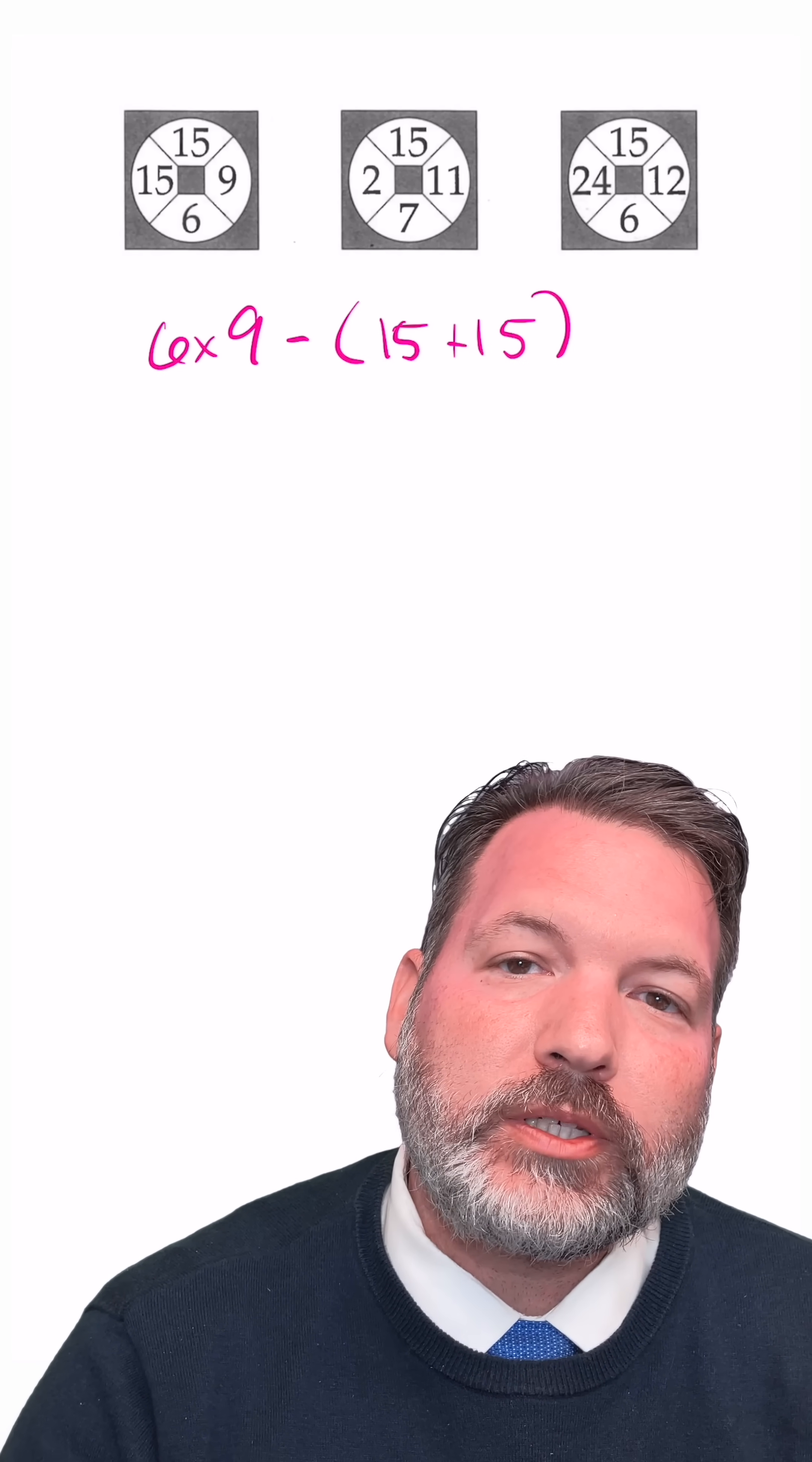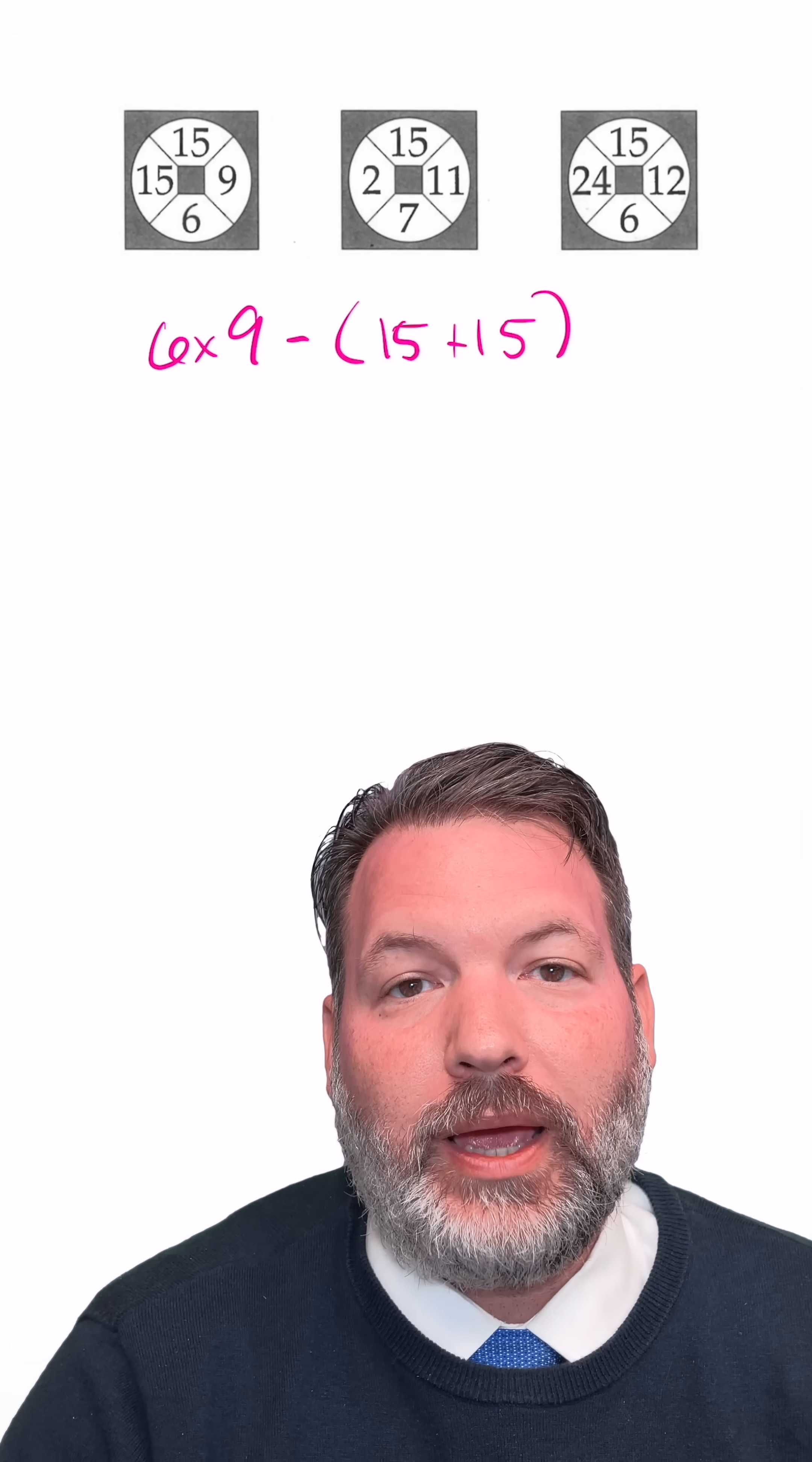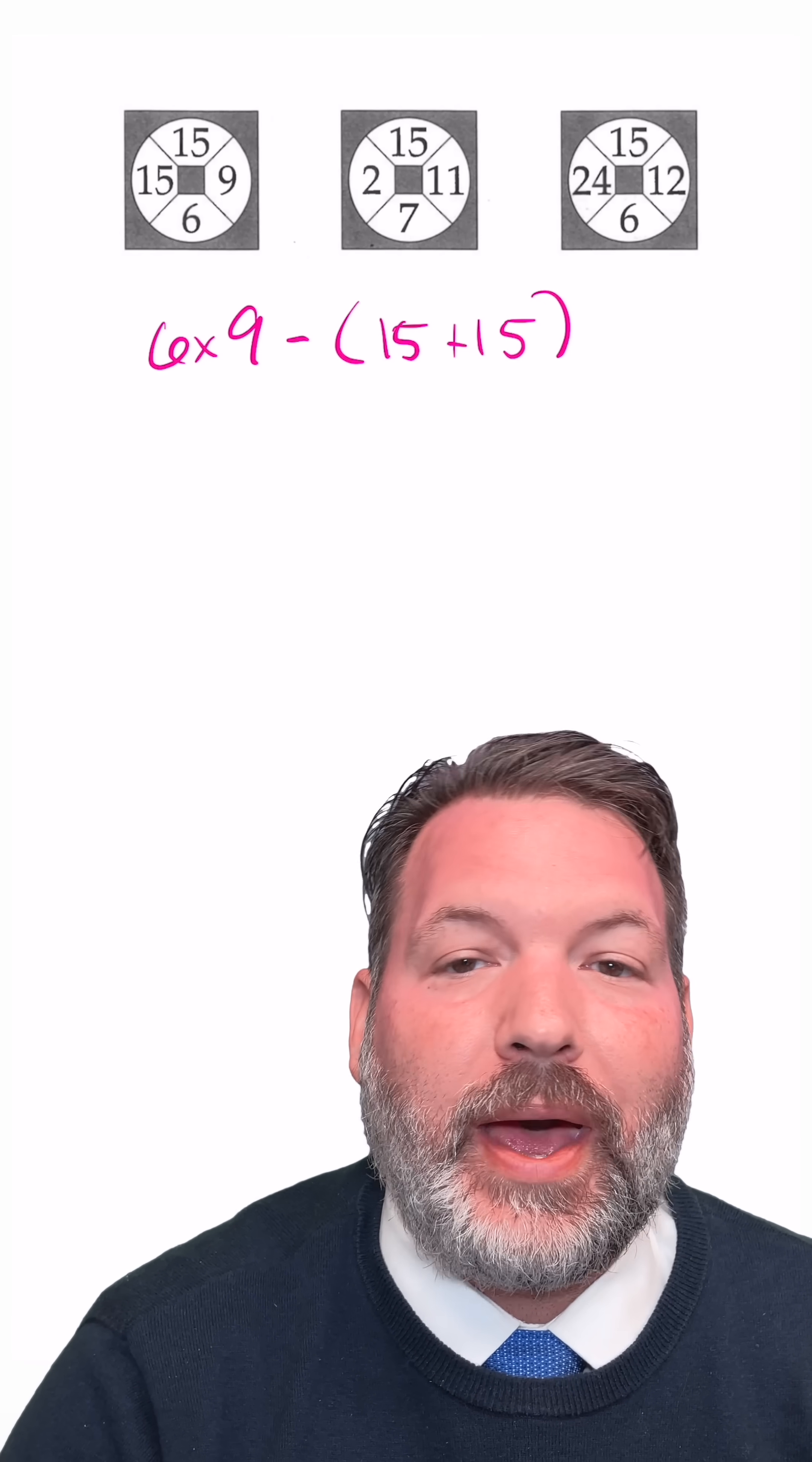The reason the game tends to work so well is there are lots of ways to multiply to get 24: 2 times 12, 3 times 8, 4 times 6. And then there are also numbers near 24 that are easy to get to, that you can then try and add and subtract to get back to 24.